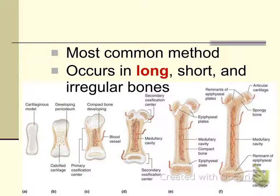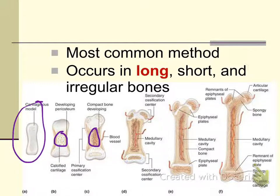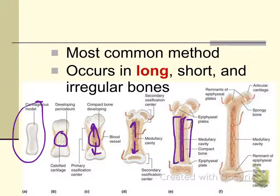Endochondral ossification is the most common method of ossification and it occurs in long, short, and irregular bones. The first bone is completely cartilage, and then slowly at the center of the diaphysis, the cartilage breaks down and calcifies. This portion is called the primary ossification center because that's where the first bone forms. It gradually grows outward, and then the center portion becomes the medullary cavity while the outer layer becomes the compact bone seen in the long bone.